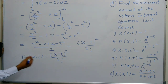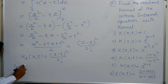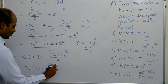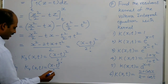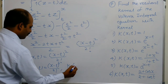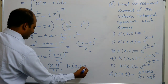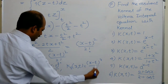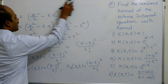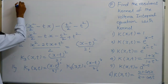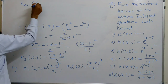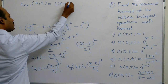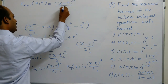Similarly, K4 of X, T equals (X minus T)³ / 3!, K5 of X, T equals (X minus T)⁴ / 4!, and so on. In general, K(n+1) of X, T equals (X minus T)^n / n!.